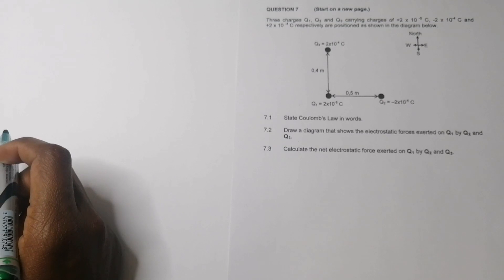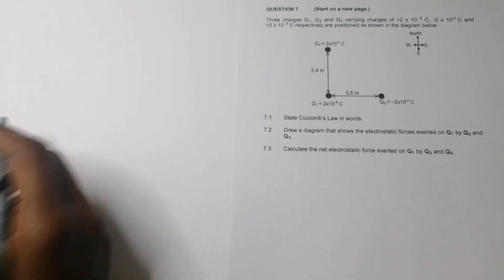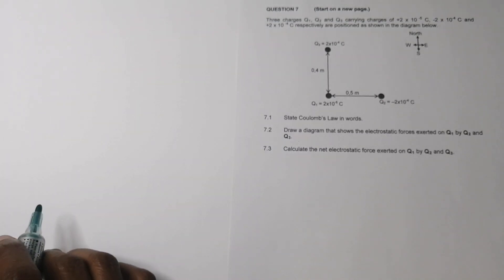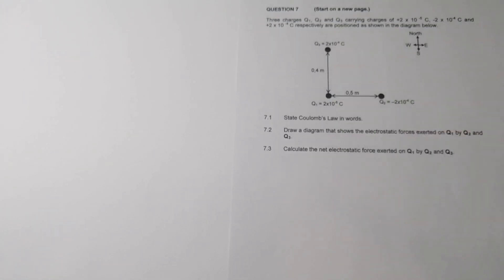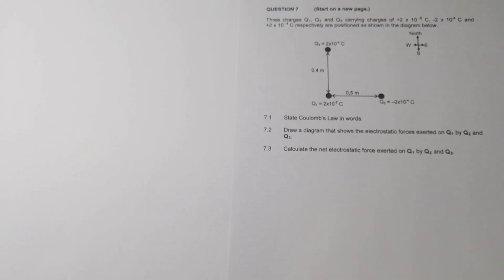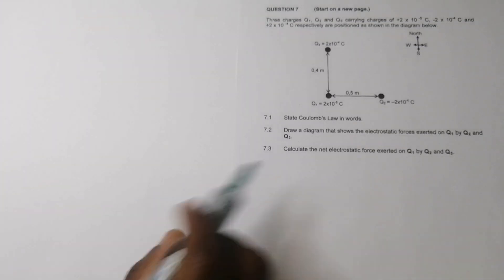They say: state Coulomb's Law in words. Coulomb's Law states that the electrostatic force — the force of attraction or repulsion — between two point charges is directly proportional to the product of the magnitudes of their charges, and inversely proportional to the square of the distance between them. Make sure you get those parts right.